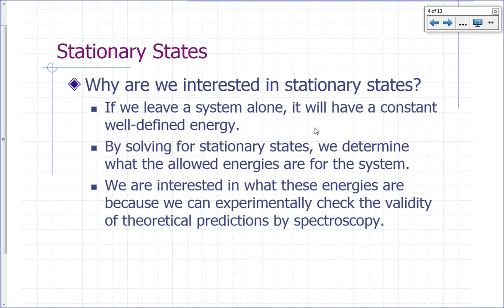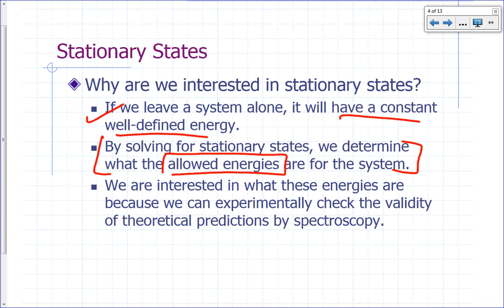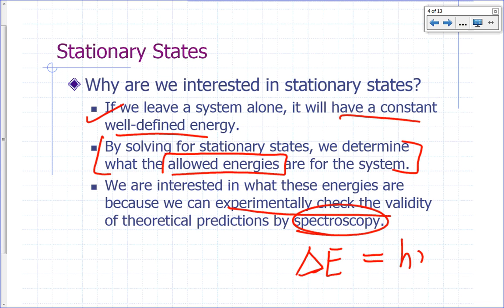We're interested in stationary states because if we leave the system alone, it has a constant well-defined energy. By solving for stationary states, we determine what the allowed energies are for the system. We can verify the validity of quantum mechanical predictions through spectroscopy — the Bohr frequency condition states that ΔE = hν, where the change in energy equals h times the frequency of the photon absorbed or emitted.